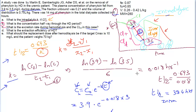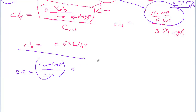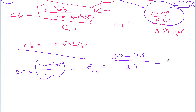The next question, part d, asks for the extraction efficiency of hemodialysis. The concentrations before and after hemodialysis are 3.9 mg/L and 3.5 mg/L respectively. The extraction efficiency formula is (C_in − C_out) / C_in, so that's (3.9 − 3.5) / 3.9, which gives approximately 0.1. There are no units for extraction efficiency.